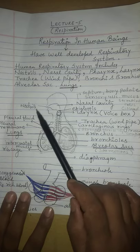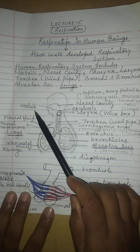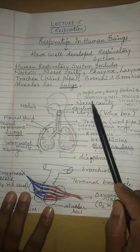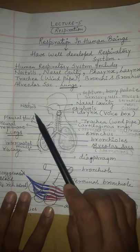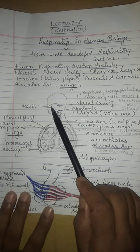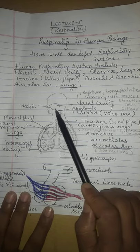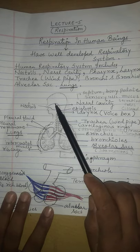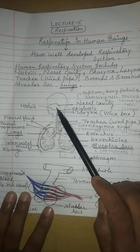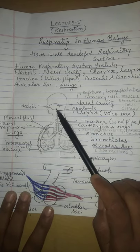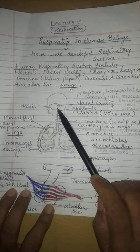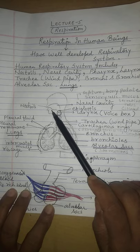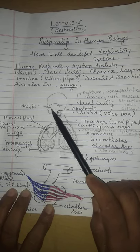The first part of the human respiratory system is the nostrils. Nostrils are two holes, two openings, which open inside into a large chamber called the nasal cavity. Just as the mouth opens into the mouth cavity, similarly the nostrils open into the nasal cavity. The nasal cavity and mouth cavity are interconnected through the pharynx.